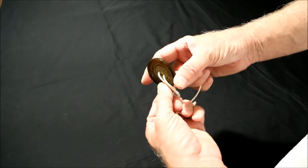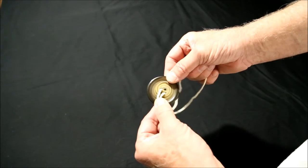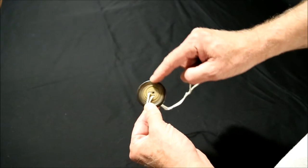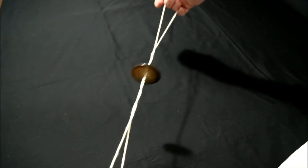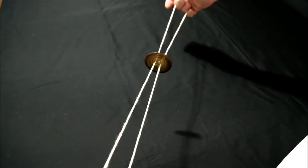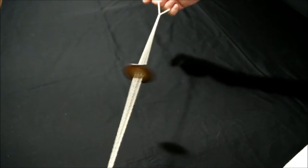To make one, start with the largest button you can find, particularly one that has a heavy outer border. Make a loop through using string, wind it up, and start pulling.